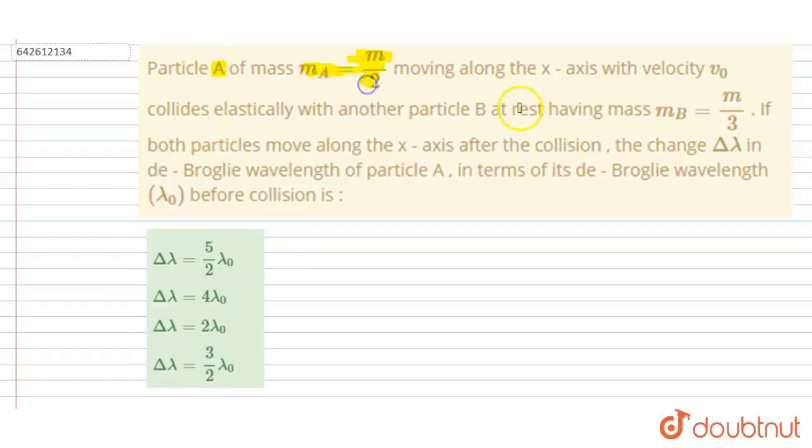mass m/2 moving along x-axis with velocity v₀ collides elastically with another particle B at rest having mass m/3. If both particles move along x-axis after collision, then you have to find out the change in